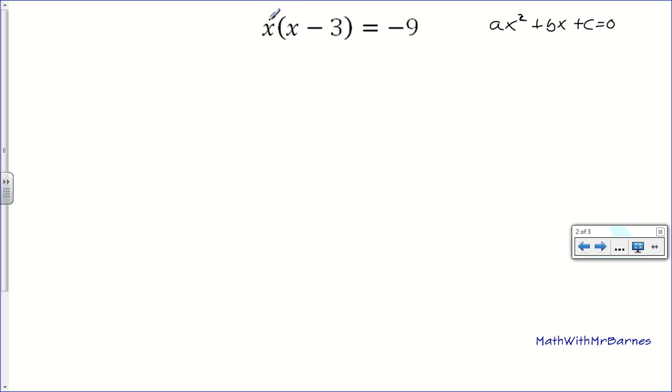The first thing we kind of do is just distribute through here with this x. So, I get x squared minus 3x. I'm just multiplying. It's equal to negative 9. Now, we don't have a 0 on the right-hand side here, so I need to get rid of this negative 9. So, I'll add 9 to both sides plus 9.